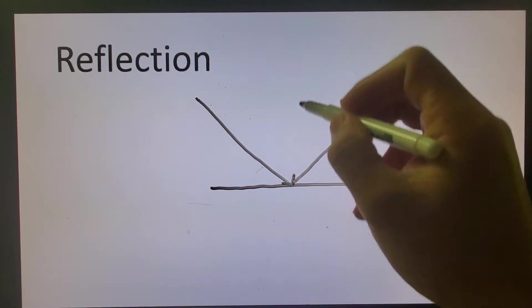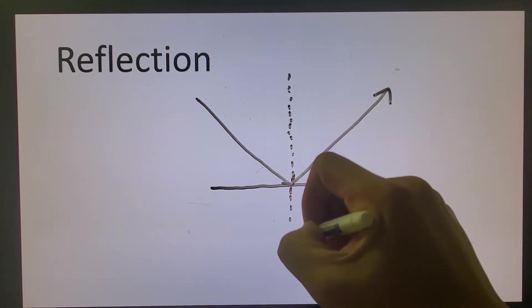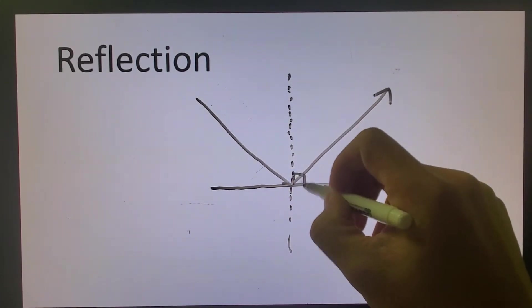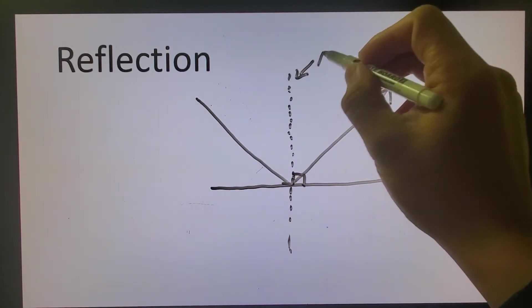Here's what we are gonna do. Over here, I'm gonna draw a line, vertical line, 90 degrees to the surface, and we call this line normal.